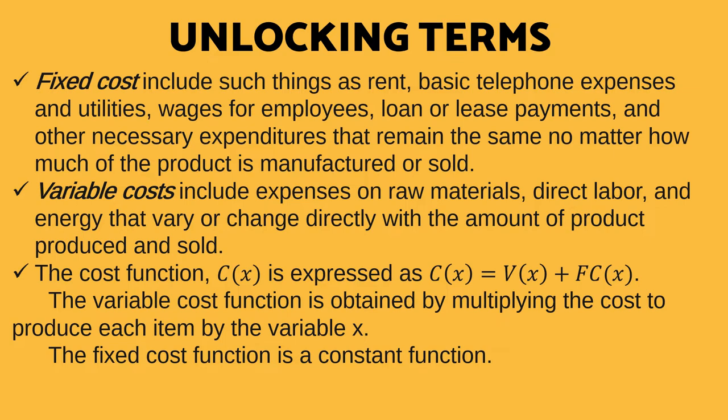Where V of X is the variable cost, and FC here is the fixed cost. The variable cost function is obtained by multiplying the cost to produce each item by the variable X. That only means the variable cost expenses of producing one unit of product, while the fixed cost function is a constant function.